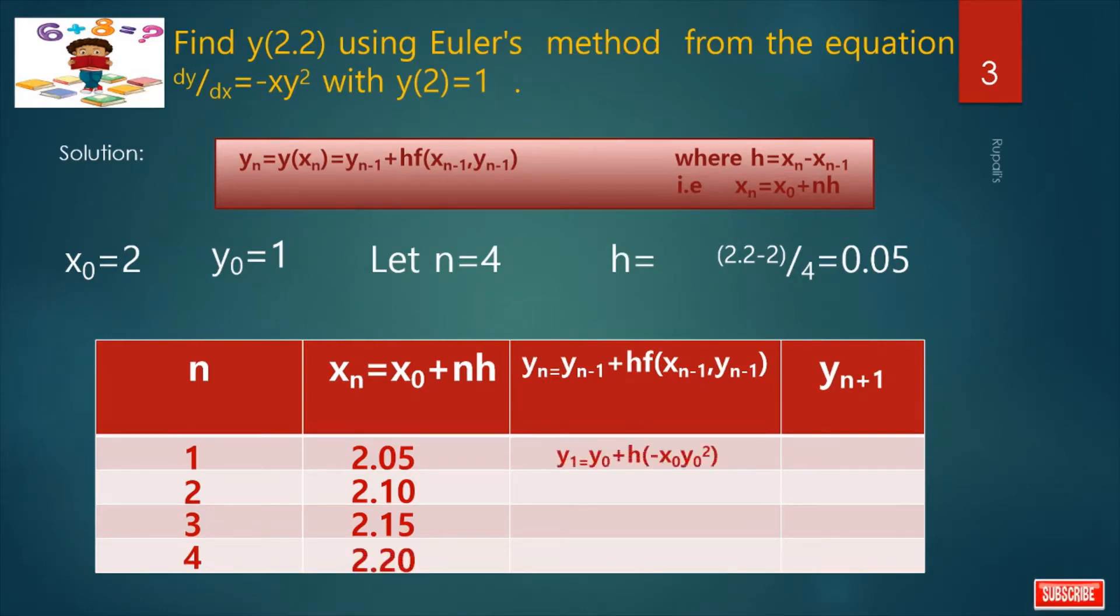Next column. What is y1? y1 is y0 plus h into minus x0 y0 squared.